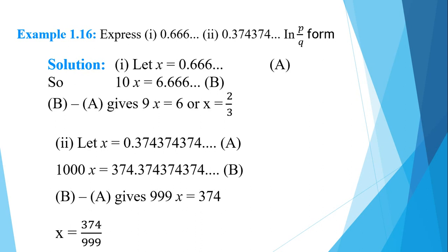For another example, let x equal 3.74 recurring. Then 100x equals 374.74 recurring. Subtracting gives 99x equals 374, so x equals 374 by 99.